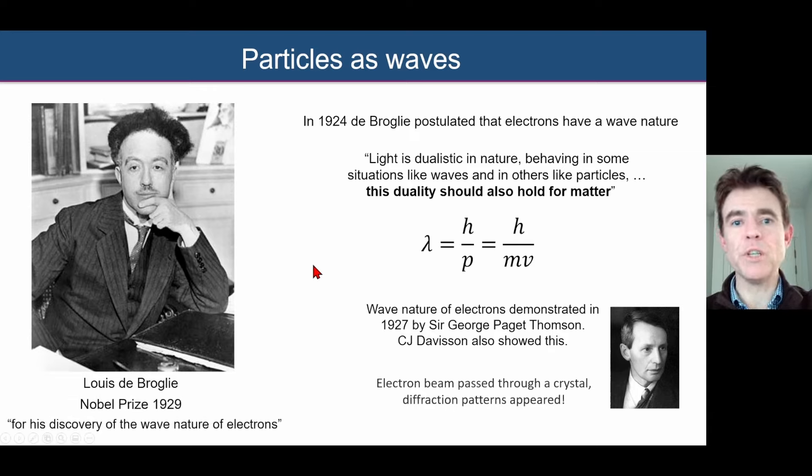So as a result, Louis de Broglie, in 1929, received the Nobel Prize for Physics for his discovery of the wave nature of electrons. And indeed, the experimentalists also shared a Nobel Prize in 1937.